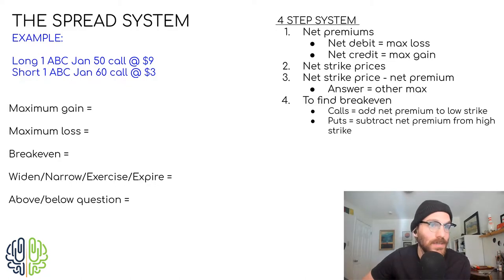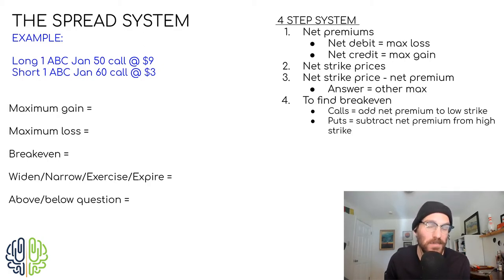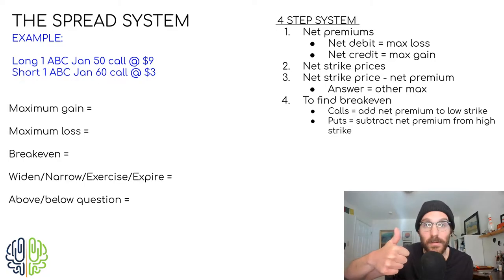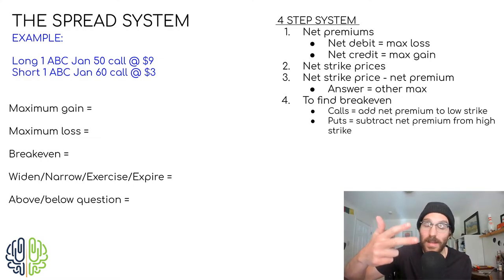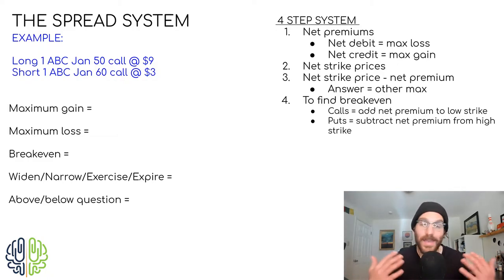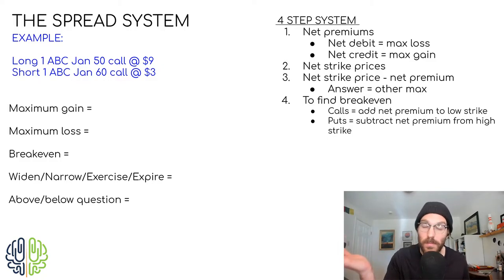One of the more important parts of options is being able to identify what strategy you're dealing with. There are really five strategies the exam tends to care about: single leg options — like I bought a call and that's all I did, or I sold a put — hedging, which is a long option with stock; income, which is short option with stock; straddles; and spreads. Those are your five. As long as you're comfortable with each one, those are the primary option strategies they'll bring up on the exam. A spread is long a call and short a call simultaneously, or long a put and short a put simultaneously.